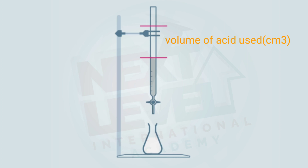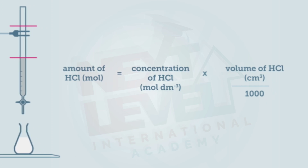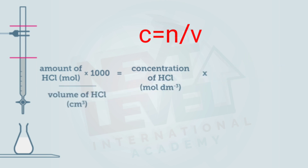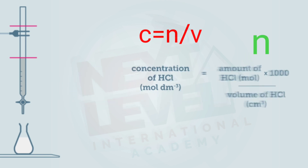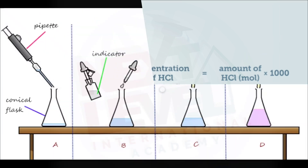Volume comes from the burette. For moles, we use the balanced equation — since the molar ratio of NaOH to HCl is 1:1, the number of moles of sodium hydroxide equals the number of moles of HCl. Then C = n/V, where V is the volume of acid in cubic decimeters and n is the same moles as sodium hydroxide. This is how we find the final concentration of the acid.